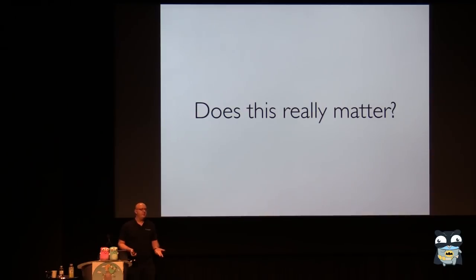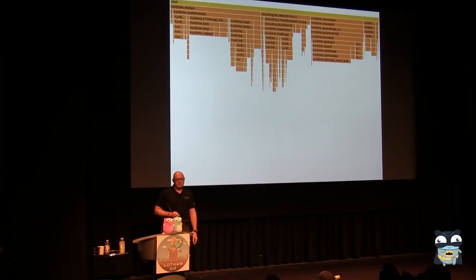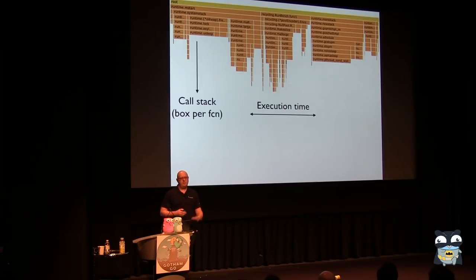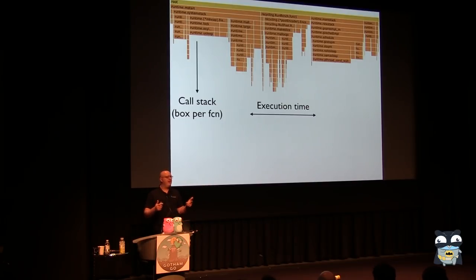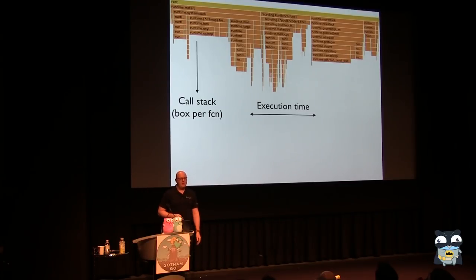Does this really matter to us as programmers? The answer is going to be yes. This is a profiling tool called a Flame Graph for a program I'll talk about later. Every box represents a function call that the profiler collected. The call stack grows down, and the width of the box is the execution time summarized across all the different profile snapshots that were taken.